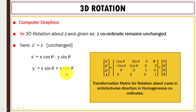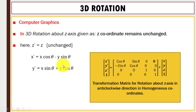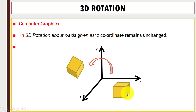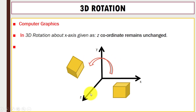For rotation about the z-axis, the z-coordinate remains unchanged. The transformation is applied using the x-y plane. An example shows the object being transformed using the x-y plane while z remains unchanged.